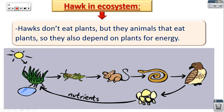But the hawk depends on plants to get its energy. As we said before, if the hawk eats the snake, the hawk takes chemical energy from the snake. The snake takes chemical energy from the mice, the mice take it from the insect, and the insect takes it from the plant. So ultimately the hawk takes chemical energy that originated from the plant. Plants are the main source or producers of chemical energy for all living organisms.